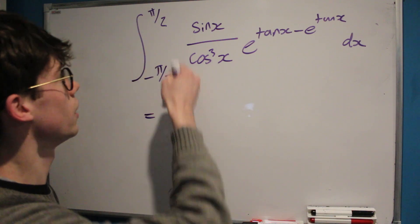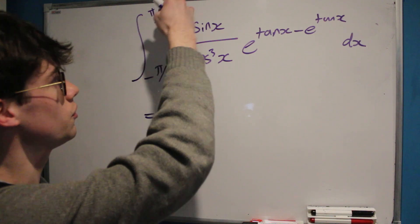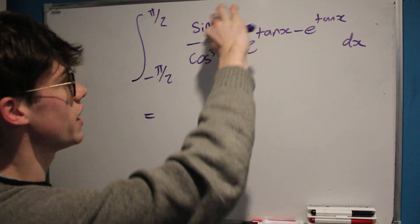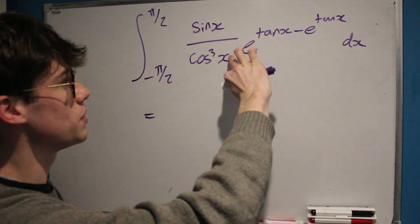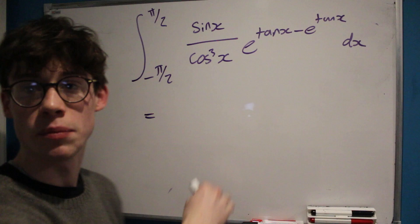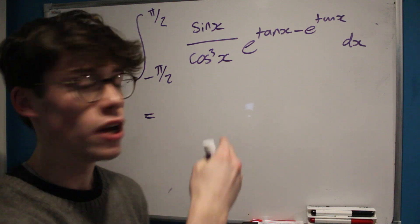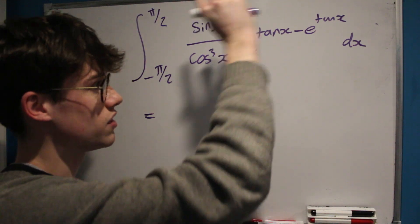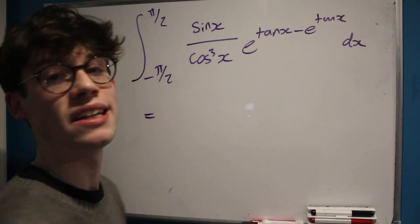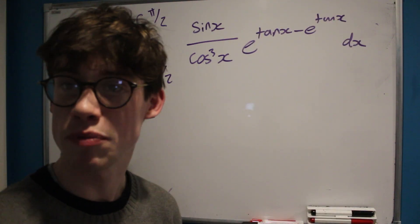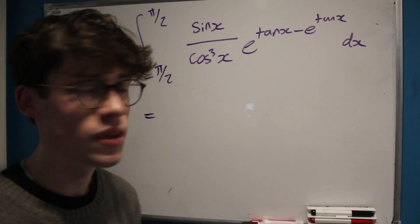It's the integral from negative pi over 2 to pi over 2 of sine x over cos cubed x, multiplied by e to the power of tan x minus e to the tan x, with respect to x.